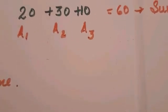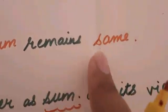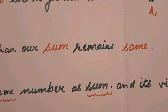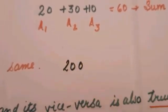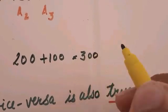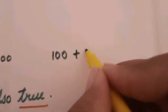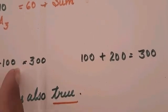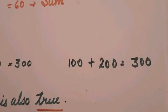Point number two: if we change the position of our addends, even then our sum remains the same. For example, suppose I want to add 200 and 100 — we get the sum 300. If I change the position of addends and make 100 the first addend and 200 the second addend, even then the sum will be 300. So there is no effect on the positions of the addends.